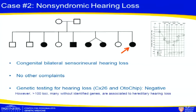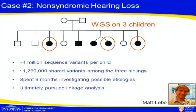Case number two is a family with non-syndromic hearing loss. Five of nine children were affected, all with the same shaped audiogram and no other complaints. Genetic testing was already done for clinically available genes and was negative. So we moved on to whole genome sequencing on three children. There were about four million variants per child, and by comparing the genomes across all three children, we narrowed that down to just 1.25 million. We spent nine months trying to find an etiology and were not successful.